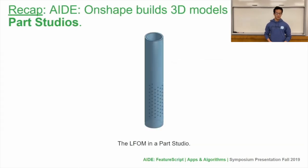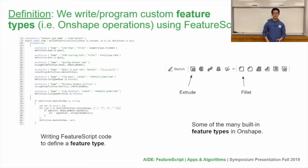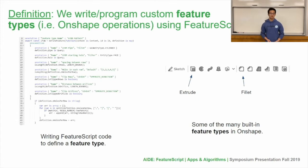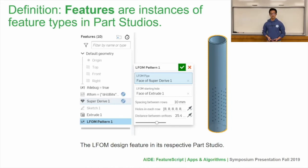Just to recap: AID Onshape is building 3D models within Onshape Part Studios, and what we're doing is writing custom feature types using FeatureScript. Feature types can include things like Sketch, Extrude, or Fillet — they're some of the operations you can make in a Part Studio, and they're also analogous to classes within object-oriented programming. Features are just instances of these feature types within Part Studios, analogous to objects within object-oriented programming, as you can see on the screen.